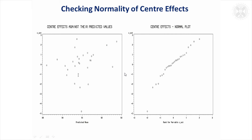We must also check the centre effects. It was a multi-centre study, so the centre effects were also fitted as random. This is a residual plot for the centre effects — the random effects are plotted against the predicted means for each of the centres, with the zero line here which we'd expect them to be distributed around. It doesn't look too bad apart from one possible centre that had a low random effect, and that shows up on the normal plot as well.